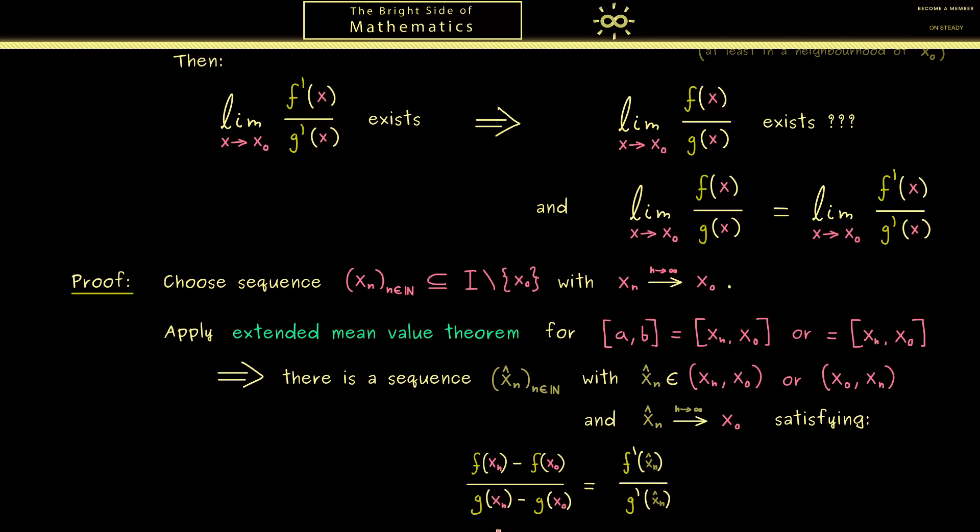Namely, we have that this strange mean slope given by the two functions f and g is equal to the quotient with the derivatives f'(x̂ₙ) divided by g'(x̂ₙ). Please note here on the left-hand side we have the boundary points of the interval. So xₙ and x₀, and it does not matter in which order they occur. However, by the assumption of the theorem we know that f(x₀) and g(x₀) vanish. So the whole left-hand side is just f(xₙ) divided by g(xₙ). Ok, now please recall when we put in that this limit exists, this means that the limit of the right-hand side exists. Hence we can conclude the limit on the left-hand side also exists and is equal to the other limit.